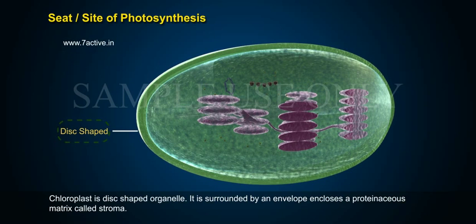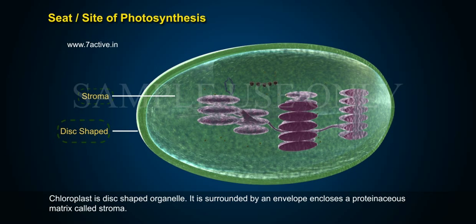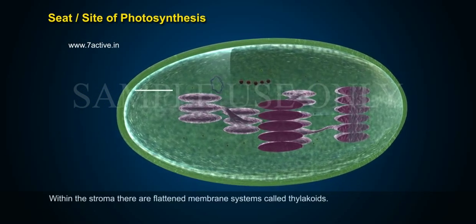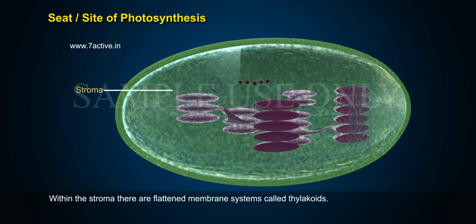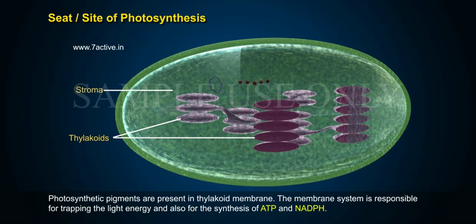Chloroplast is a disc-shaped organelle. It is surrounded by an envelope that encloses a proteinaceous matrix called stroma. Within the stroma, there are flattened membrane systems called thylakoids. Photosynthetic pigments are present in the thylakoid membrane. The membrane system is responsible for trapping light energy and for the synthesis of ATP and NADPH.